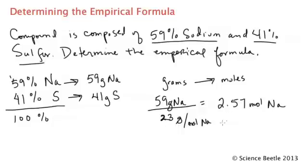I repeat this process for sulfur: 41 grams of sulfur divided by its atomic mass, which is 32 grams per mole. If I take 41 divided by 32, that gives me 1.28 moles of sulfur.